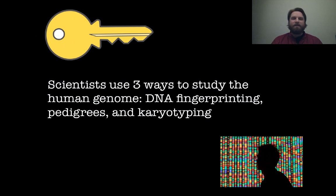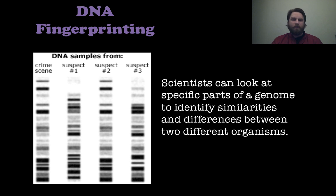Scientists use three ways to study the human genome. That's the collection of all genes on all chromosomes in human cells. They use DNA fingerprinting, pedigrees, and karyotyping. Now we're going to talk about the first two in this lesson. So let's start with DNA fingerprinting.